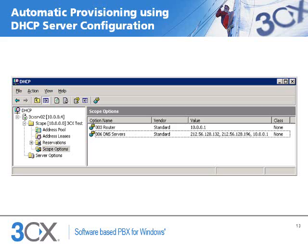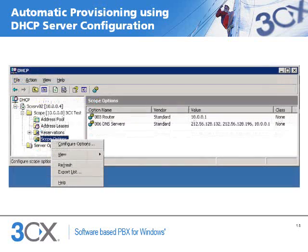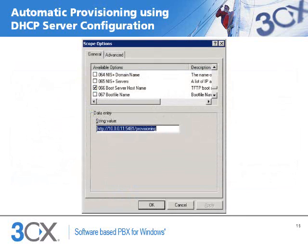We can now configure the DHCP server on the LAN to deliver to the phone the provisioning path. A DHCP server will allow a device to request its network settings automatically, and typically will get an IP address, a default gateway, and also an IP address for a DNS server. This is the recommended method. This example will show you how to configure Microsoft's DHCP server. To completely configure the phone, you will need to specify an additional scope option. Option 66 should contain the provisioning path for the phone to retrieve its configuration file.